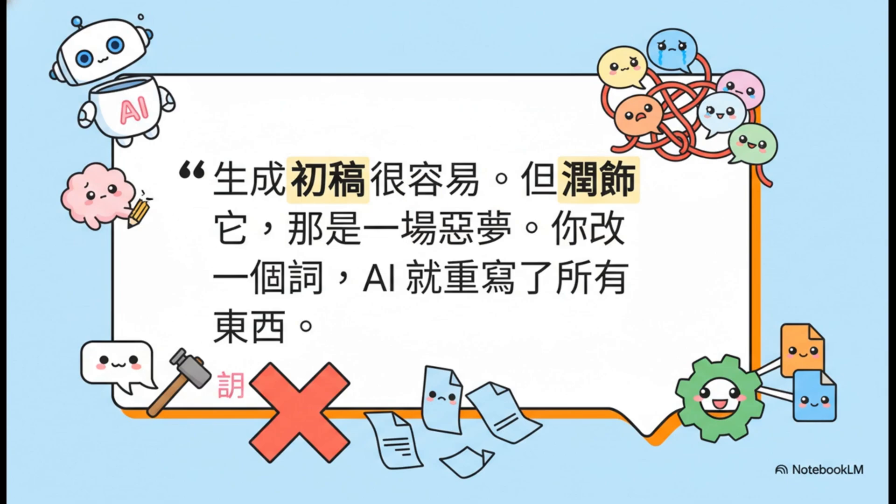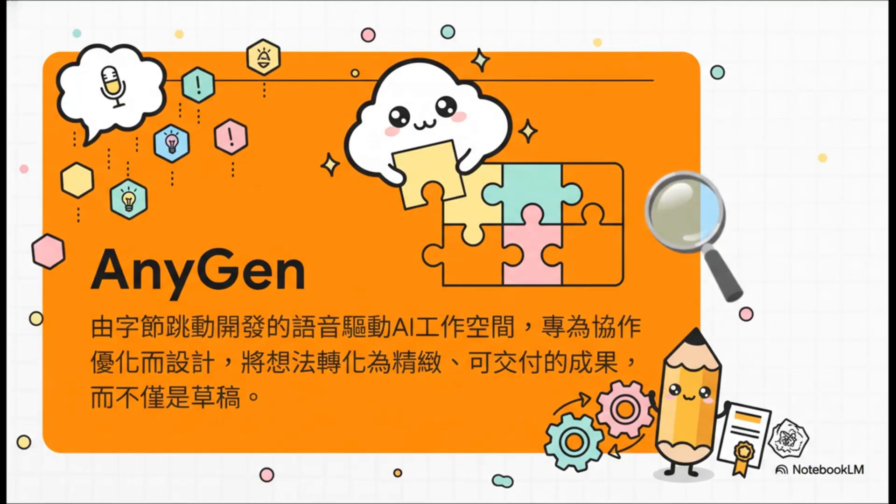改来改去AI自己都搞混了，完全忘记一开始的重点是什么。最后你只能叹一口气，好吧，全部砍掉重练。就是这种让人抓狂的流程，Anygen说他要来解决这个问题。